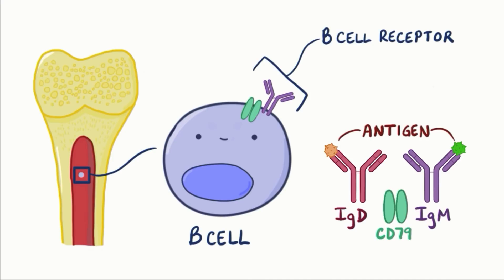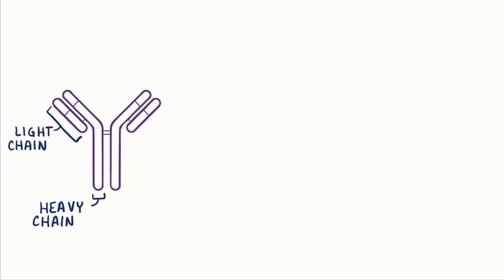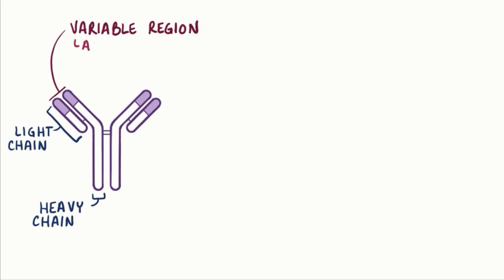An antigen is any substance recognized by that particular antibody. Each antibody has two identical light chains and two identical heavy chains that combine into a Y shape. This Y-shaped antibody has two arms with identical tips, which is called the variable region. This variable region contains an antigen-binding domain that's unique to that particular antibody.